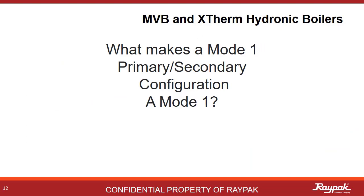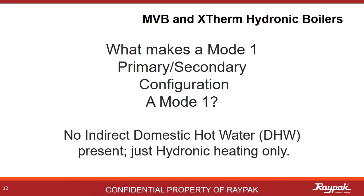So what makes a Mode 1 primary-secondary a Mode 1? It's not what's there, but what's not there. There's no indirect domestic hot water system present — it's just a straight-up hydronic heater.